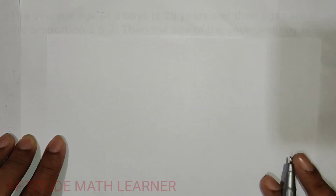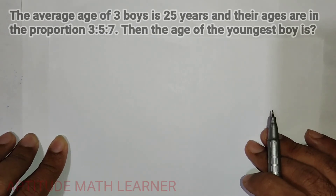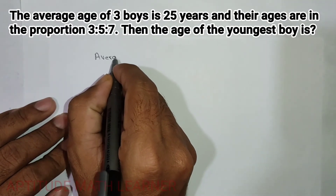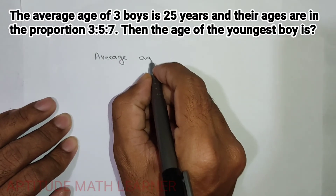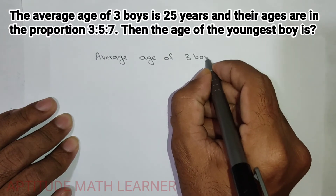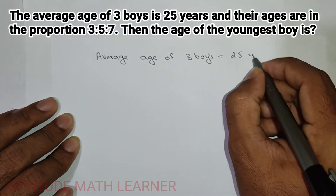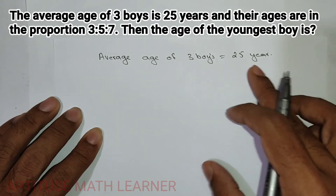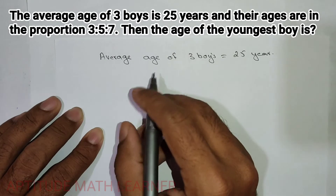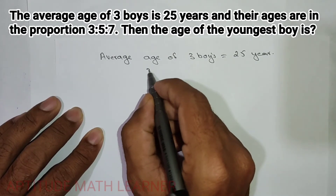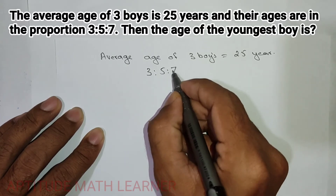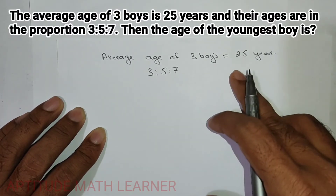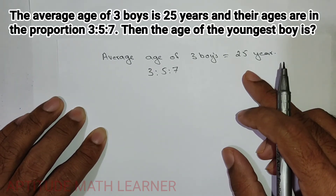You can see the question above. We are given that the average age of three boys is 25 years. They are in the proportion 3:5:7 — these are the ratios of the three boys — and their average age is 25.